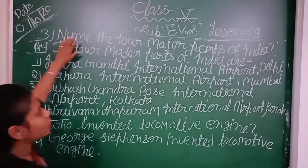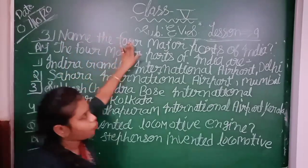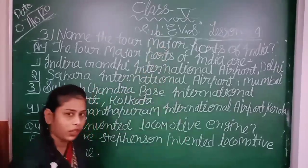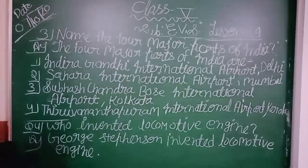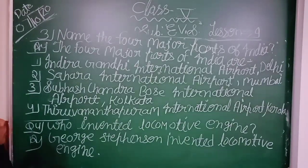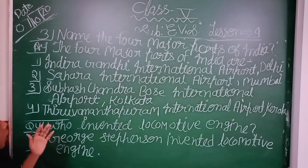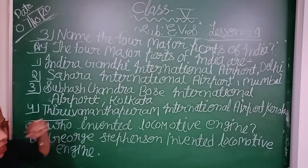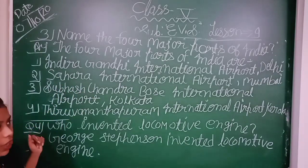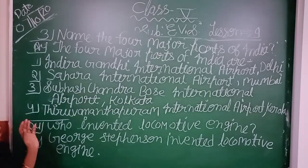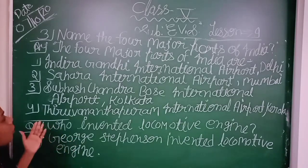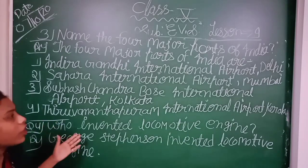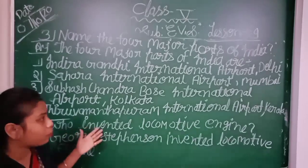Question number 12: Here are the codes of the airports. India has an international council. The four major ports of India include Indramanthi International Airport. Indramanthi International Airport is in India. This is our international airport in Mumbai.